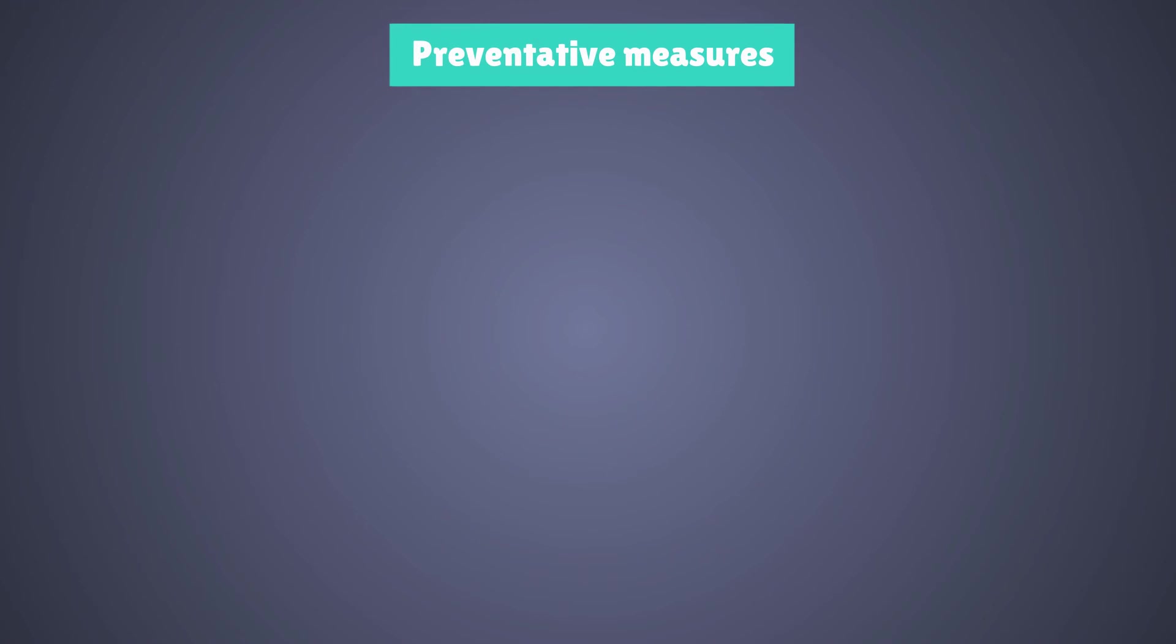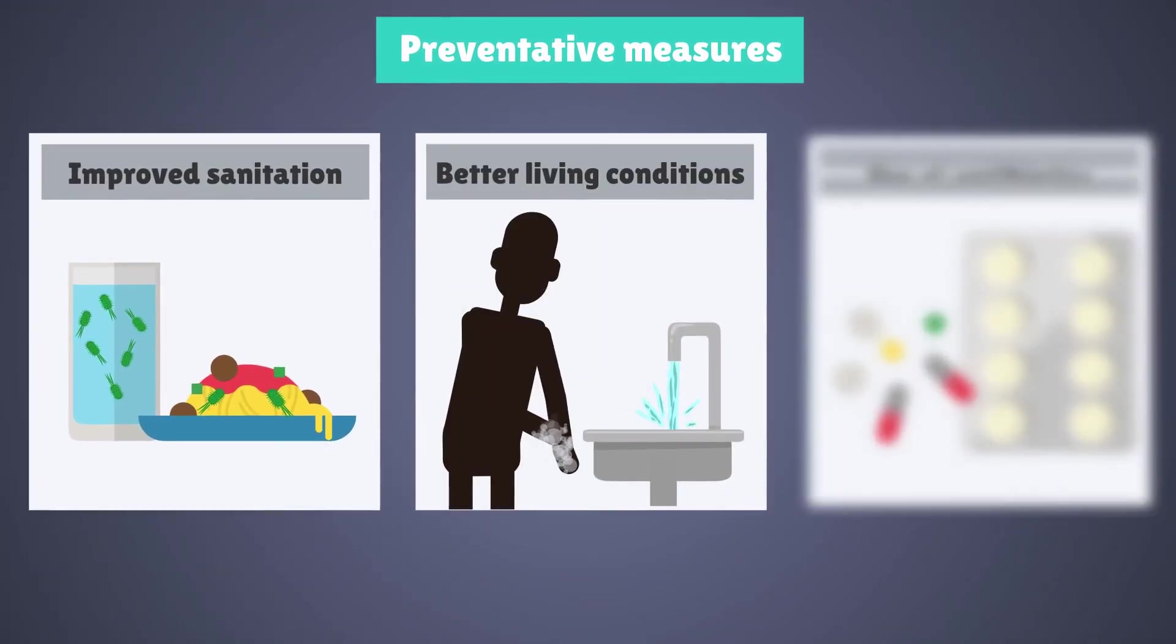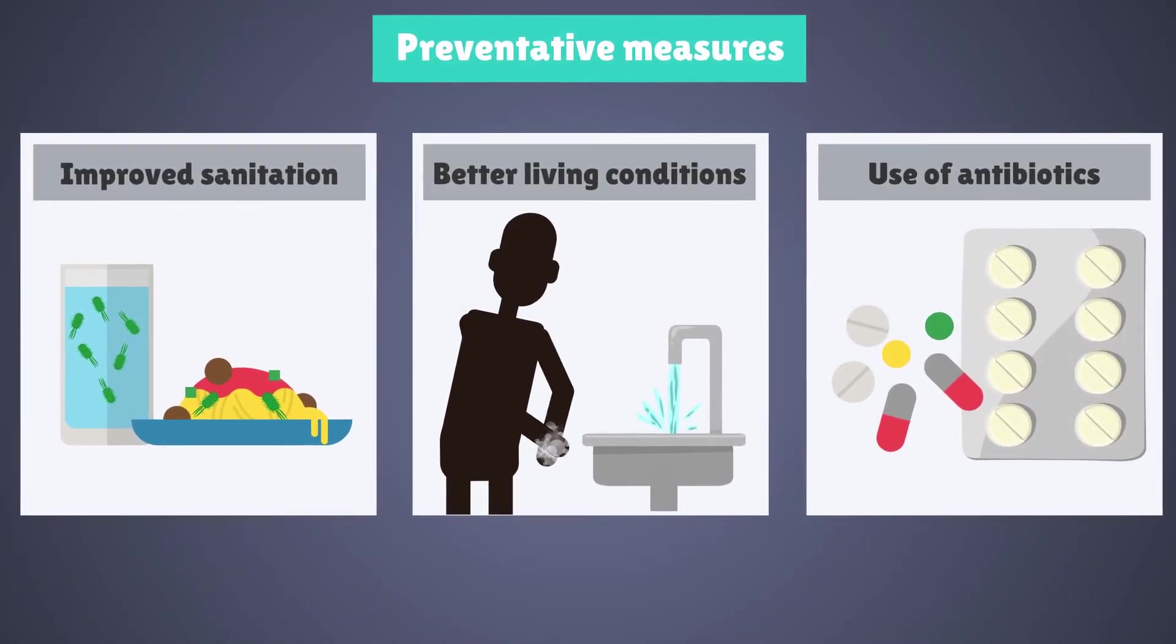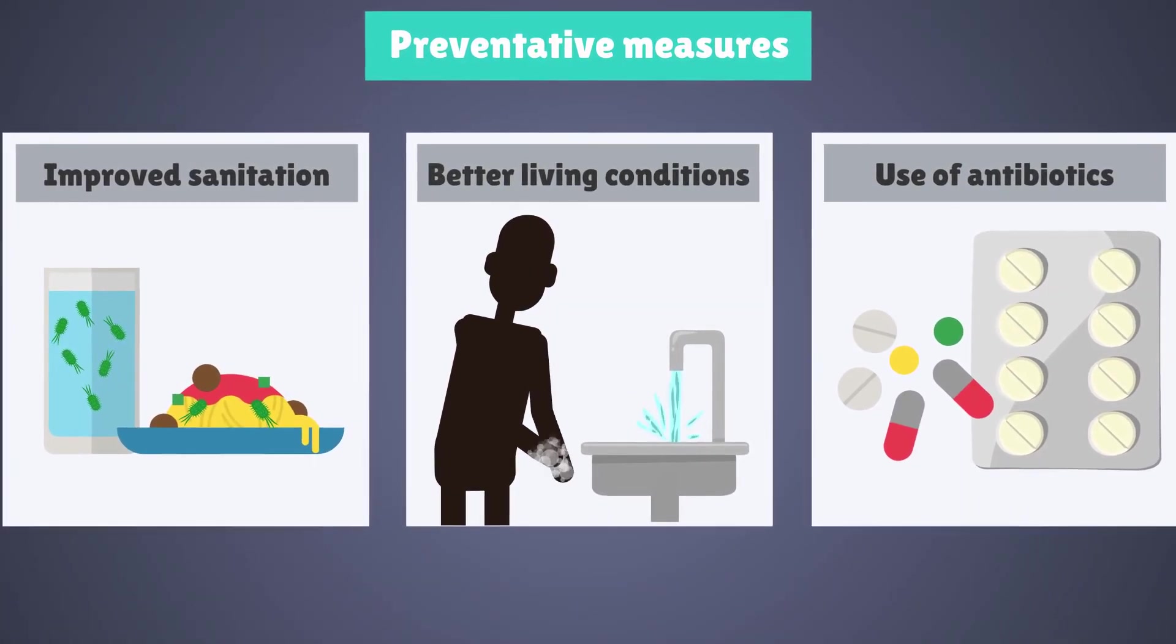There are many preventative measures that can be taken to reduce H. pylori-related stomach cancers. For example, improved sanitation, better living conditions, and the widespread use of antibiotics all play contributory roles in reducing the rate of H. pylori infection in the developed nations.